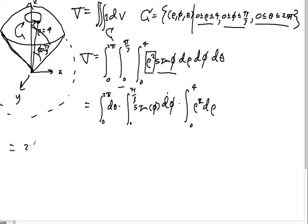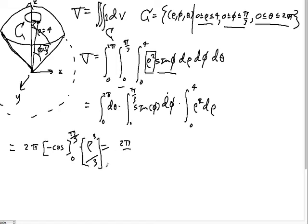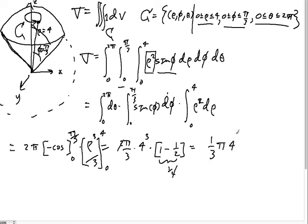Computing through: the θ integral gives 2π. The φ integral of sinφ from 0 to π/3 gives −cosφ evaluated from 0 to π/3, which is 1 − cos(π/3) = 1 − 1/2 = 1/2. The ρ integral gives ρ³/3 evaluated from 0 to 4, which is 64/3. Putting it together: 2π · (1/2) · (64/3) = (1/3)π · 4³.